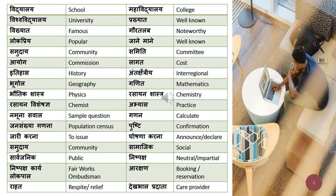Antarkshetriya means 'inter-regional' — kshetra means region and antar means inter. Bhugol is geography, ganit is mathematics, bhotik shastra is physics, rasayan shastra is chemistry. Biology, which I haven't written here, is jaiva shastra — jaiva relates to living organisms and shastra means science. Rasayan visheshagya means a chemist. Abhyas means practice.